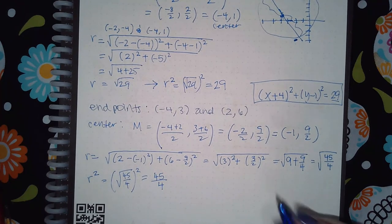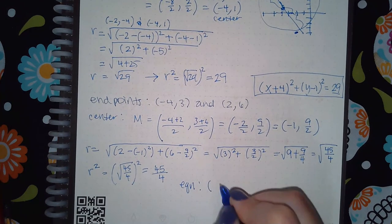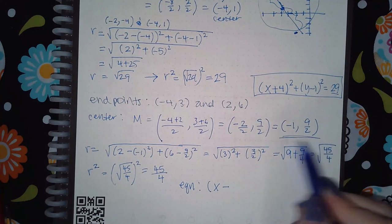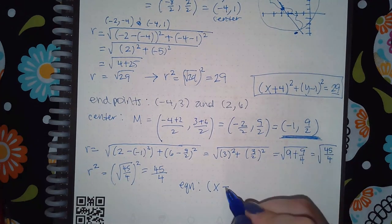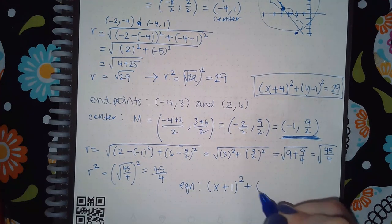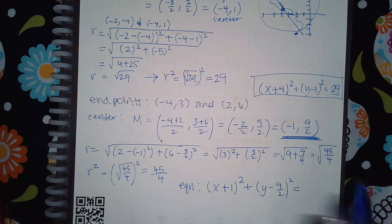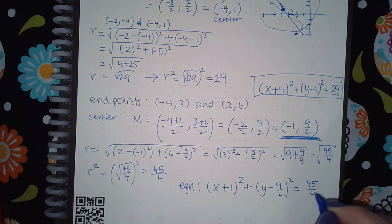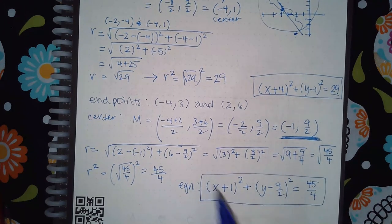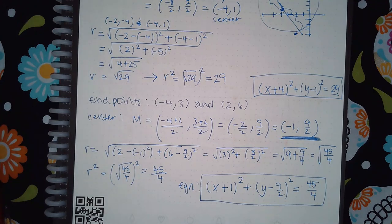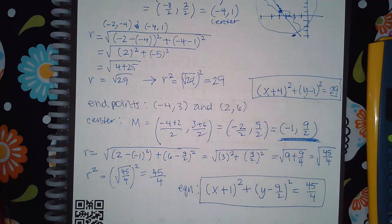So the equation is: x minus the x-coordinate of the center — which turns into plus one — squared, plus y minus nine halves squared, equals 45 over 4. I wanted to include an example with fractions so you won't be worried if your answer comes out as a fraction. It can have a fraction and that's okay — you just work with what you've got and keep going.